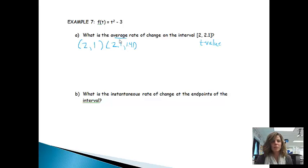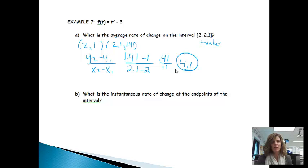Okay, so those are my two points. If I'd like to find the average rate of change, again, I'll just do y2 minus y1 over x2 minus x1. That will give me 1.41 minus 1 over 2.1 minus 2, which will give me 0.41 over 0.1. 0.41 divided by 0.1 is equal to 4.1. So that's the average rate of change on that interval.